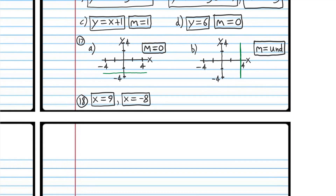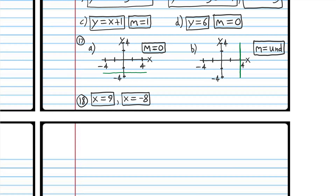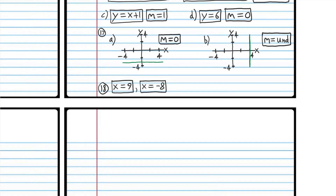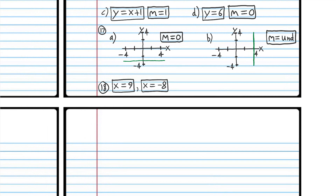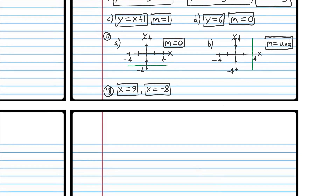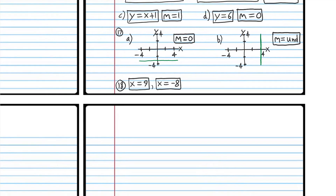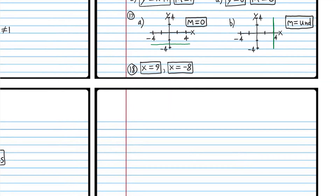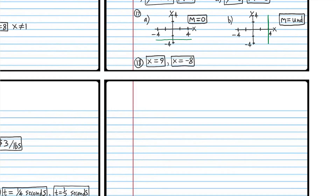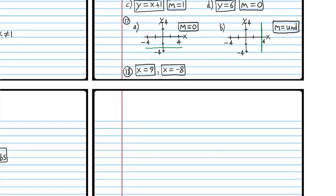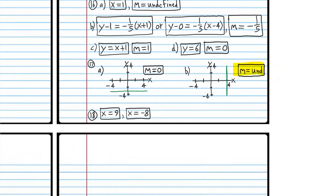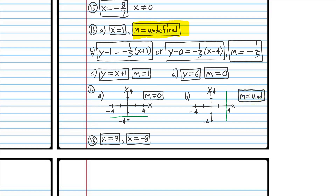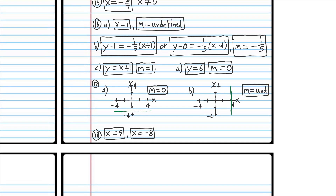There are two solutions for number 18. If you didn't write one of the solutions, subtract one-fourth of the points if you showed your work — that's most of what you have to do for that problem. 'UND' means undefined, so I just wrote an abbreviation. The slope is undefined when the graph is vertical.